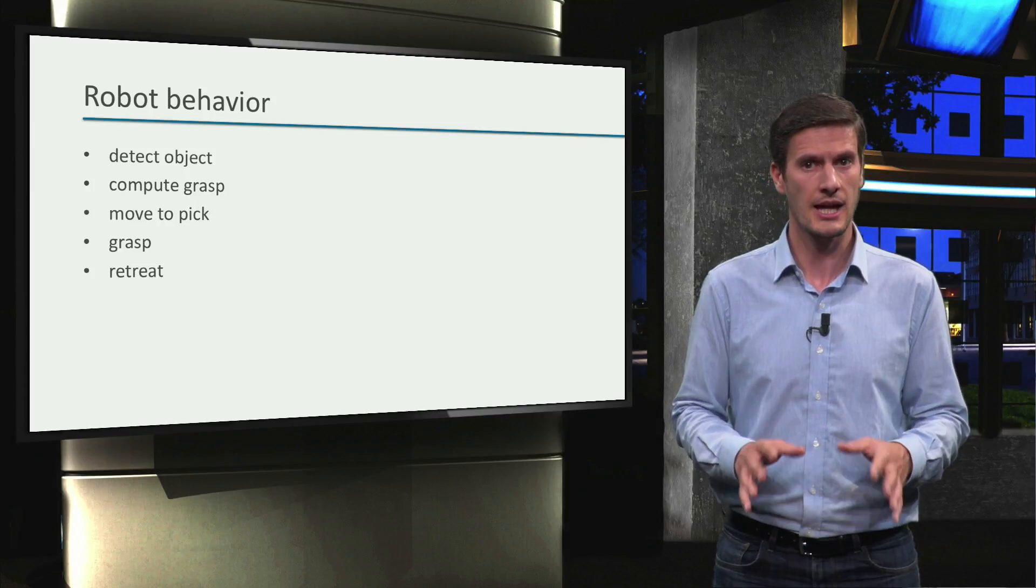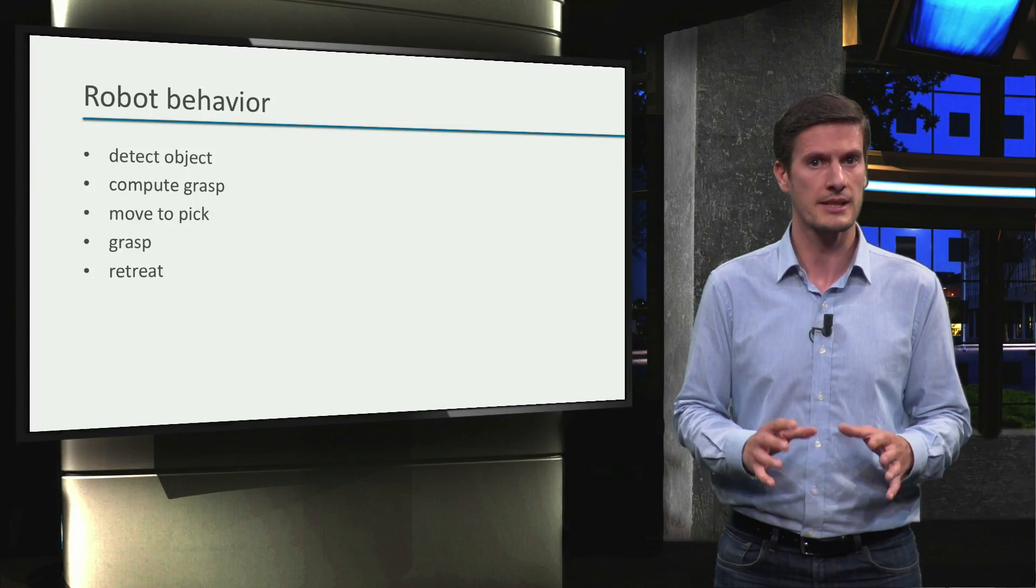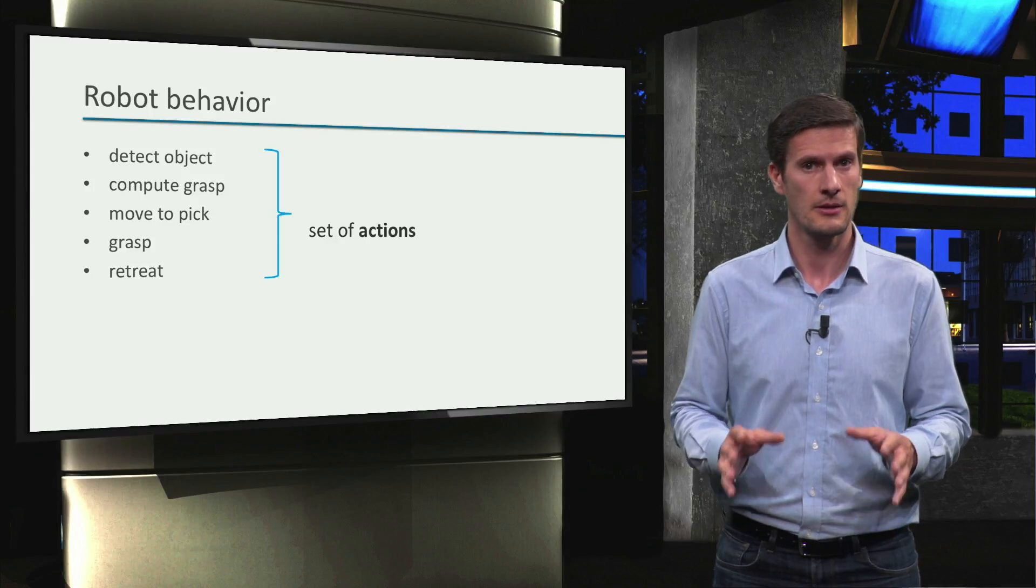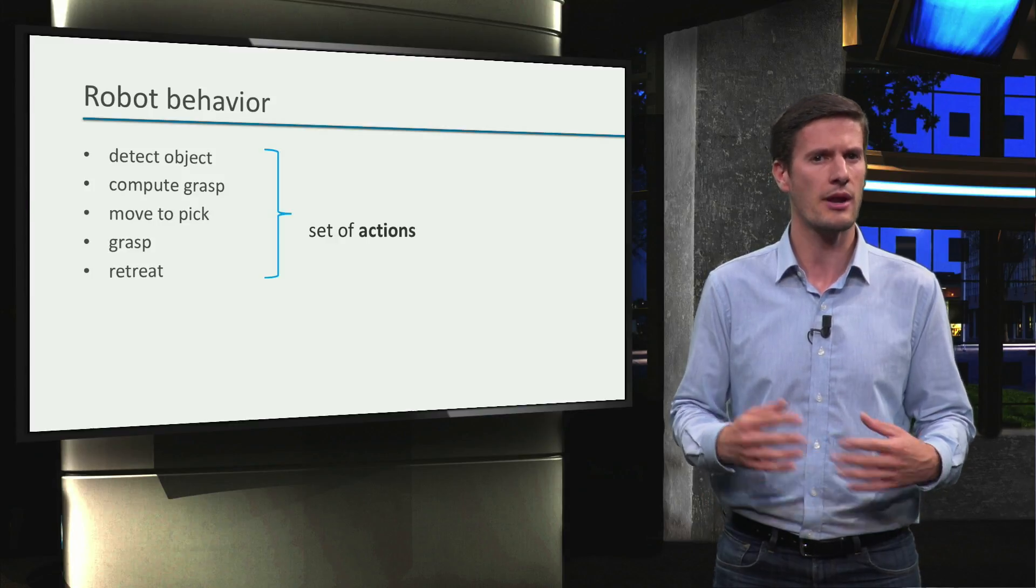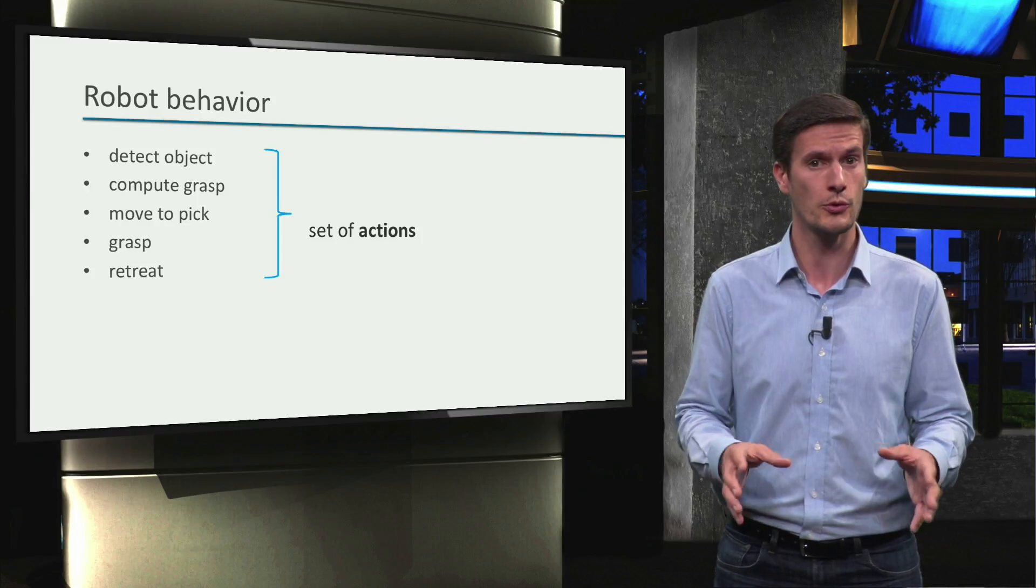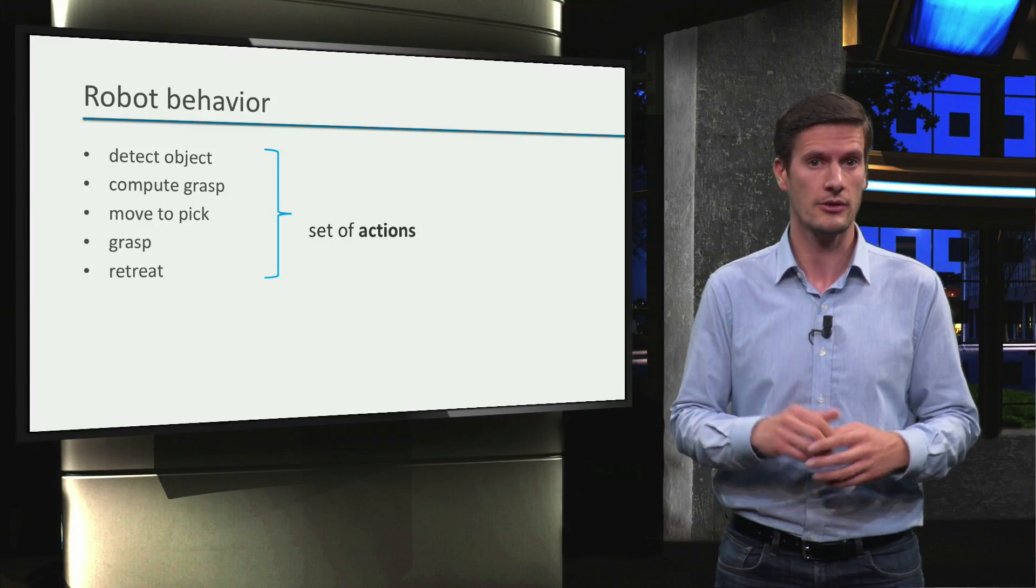So, to solve this task, the robot needs to perform a set of actions. But these actions cannot be executed randomly. For example, the robot should not move to pick the object without first locating it.